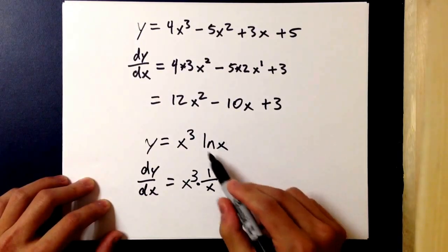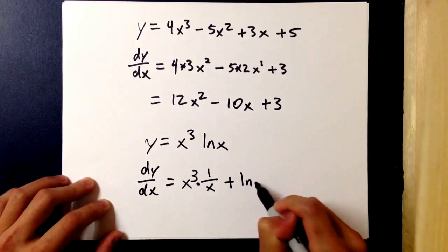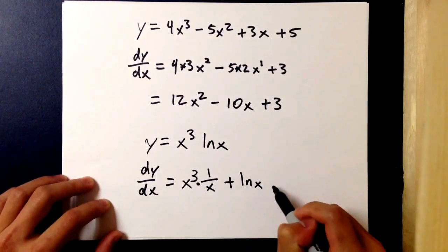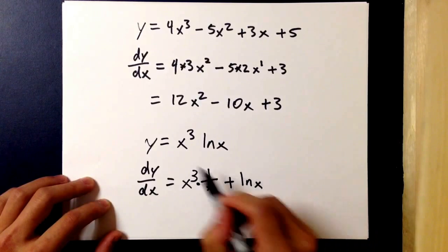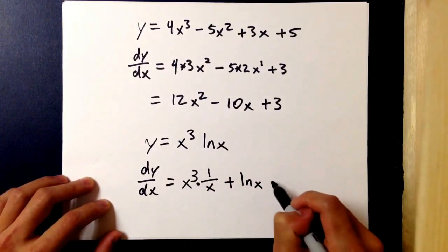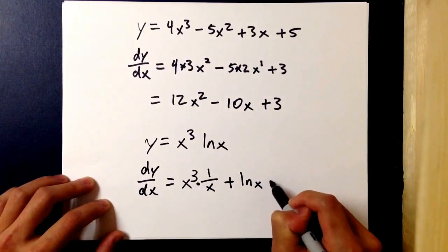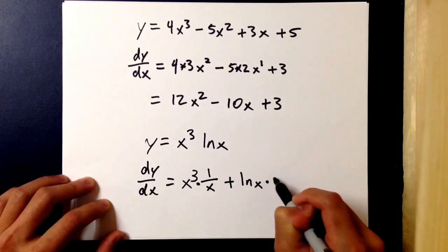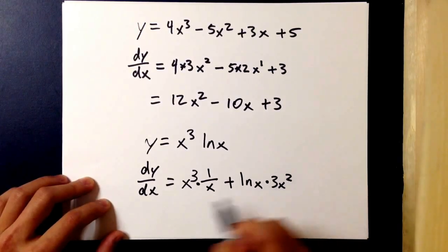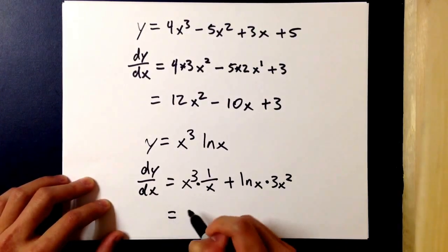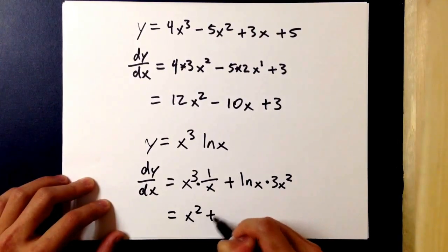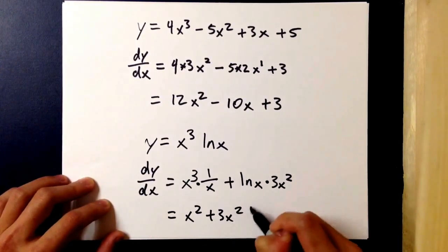the original v, natural log x, times the derivative of u. Using power rule again, you take the 3 down, subtract 1 from the exponent and you get 3x squared. If you simplify this you end up getting x squared plus 3x squared natural log x.